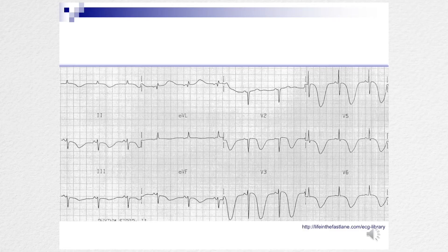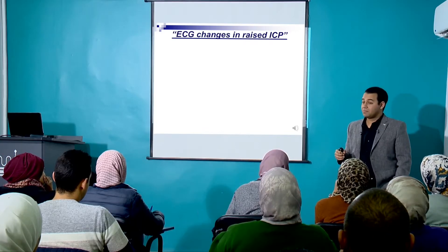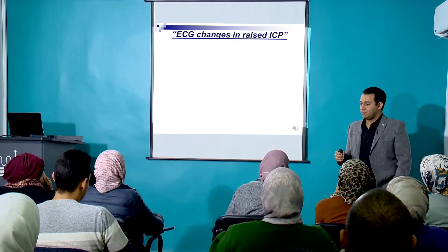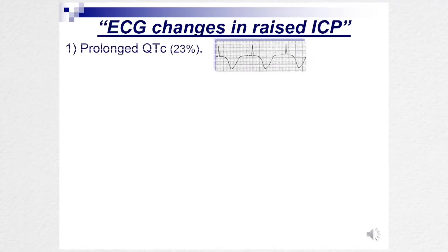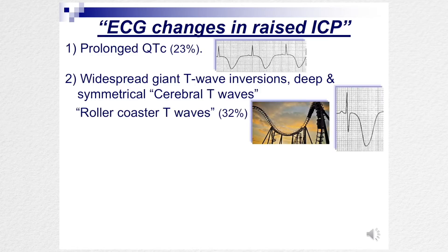Let's talk about raised ICP — raised intracranial pressure — because it looks like we're inside out. What happens to the ECG when there is raised ICP? You get a long QT, deep symmetrical T-wave inversion — they call it cerebral T-waves, and sometimes roller-coaster T-waves for obvious reasons.